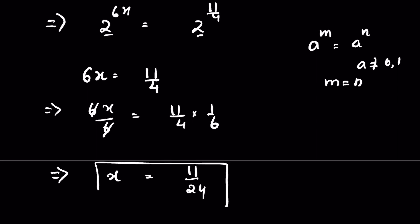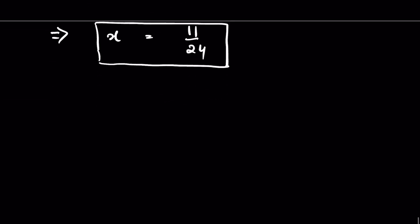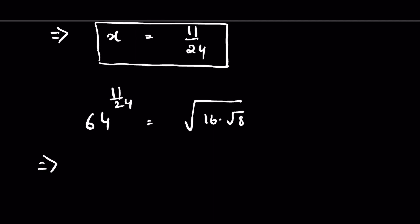This is the value of x. We can verify this answer by substituting x back: 64 raised to the power 11 upon 24 should equal 16 times the square root of 8 under square root. We check whether LHS equals RHS. 64 is 2 raised to the power 6, times 11 upon 24, and 16 is 2 raised to the power 4, and 8 is 2 raised to the power 3.